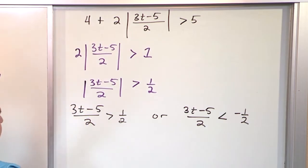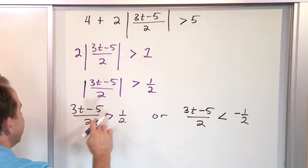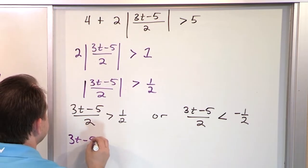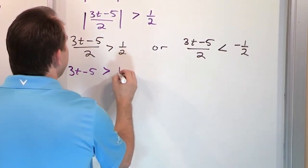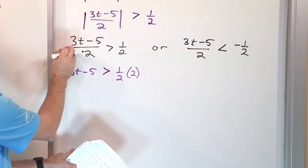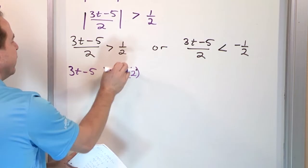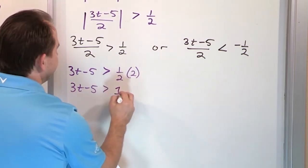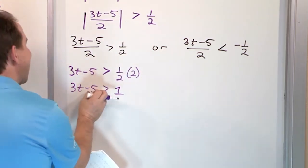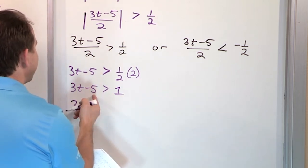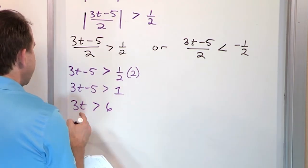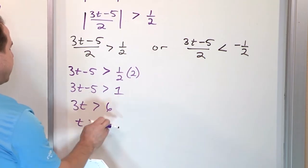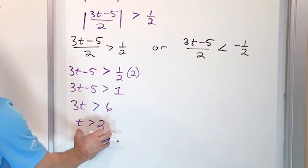So we have to solve both inequalities separately. To solve (3t minus 5) over 2 greater than 1 half, we multiply the left-hand side by 2 — that cancels the 2 in the bottom, leaving 3t minus 5. On the right-hand side, 1 half times 2 is just 1. Now we move the 5 over by adding 5: 1 plus 5 is 6. Then get rid of the 3 by dividing by 3: 6 divided by 3 is 2. So t is greater than 2. That's one half of the answer.